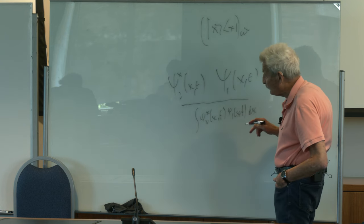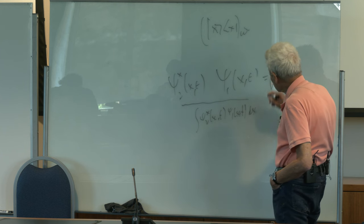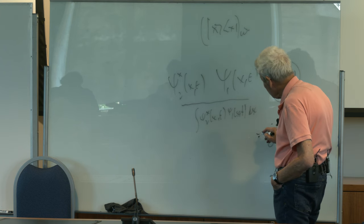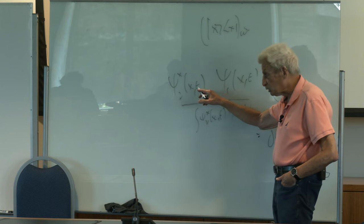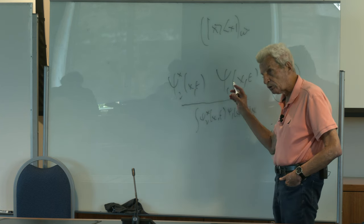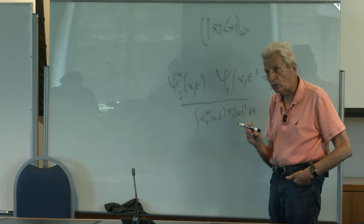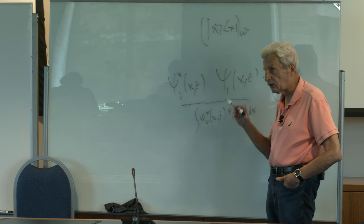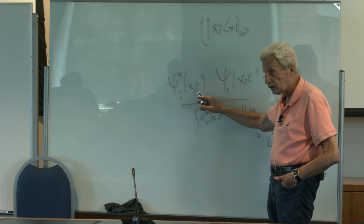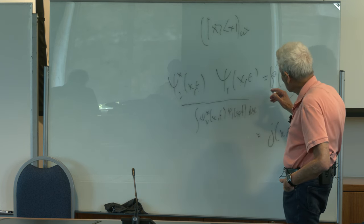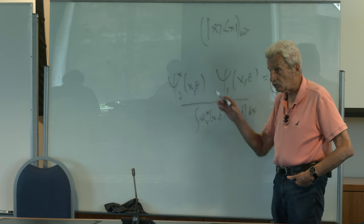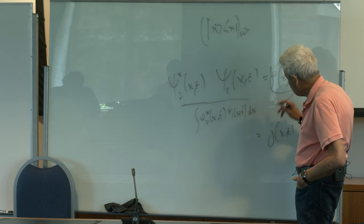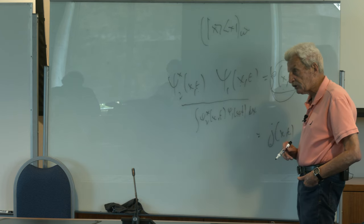That means I can define a new kind of density function rho of x and t, and there will also be a current j of x and t. It is defined exactly the same way as when I have two wave functions equal to each other, but now I have the pre-selected and post-selected functions. It gives me a new kind of rho which can be positive, negative, and complex, and I have a conservation law: d-rho/dt plus the divergence of j equals zero.